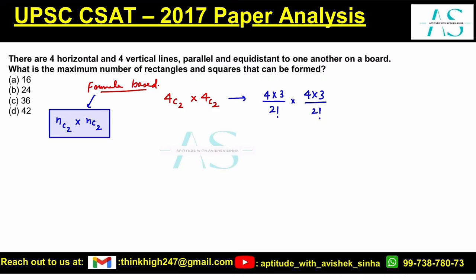2 factorial is 2, so cancelling out gives us 2. This becomes exactly 6 into 6, which is 36 figures. Option C seems to be our correct answer, from the topic permutation and combination.